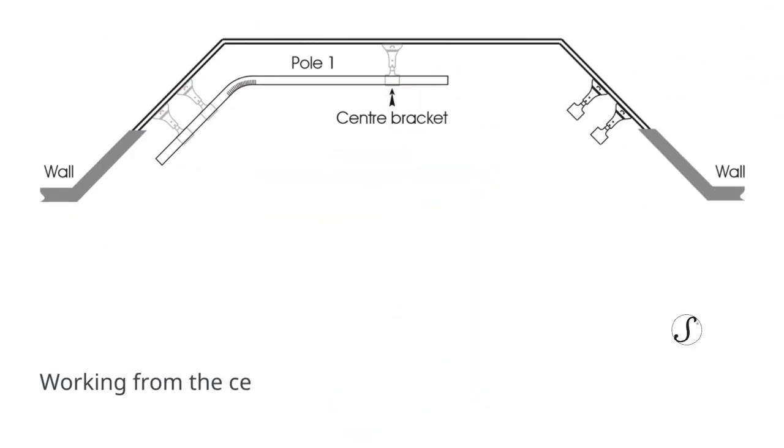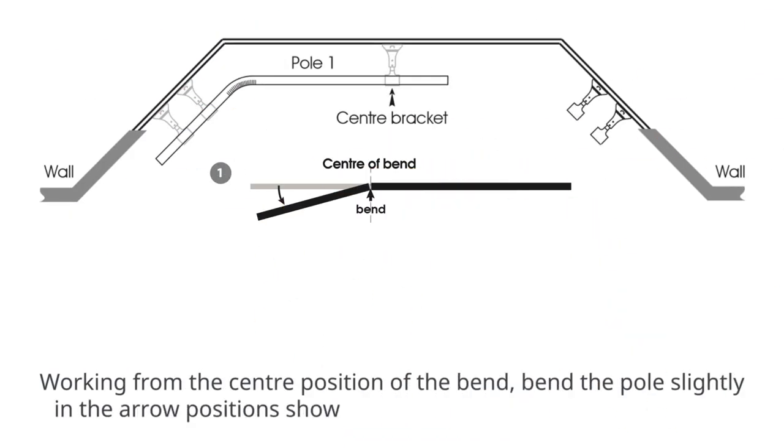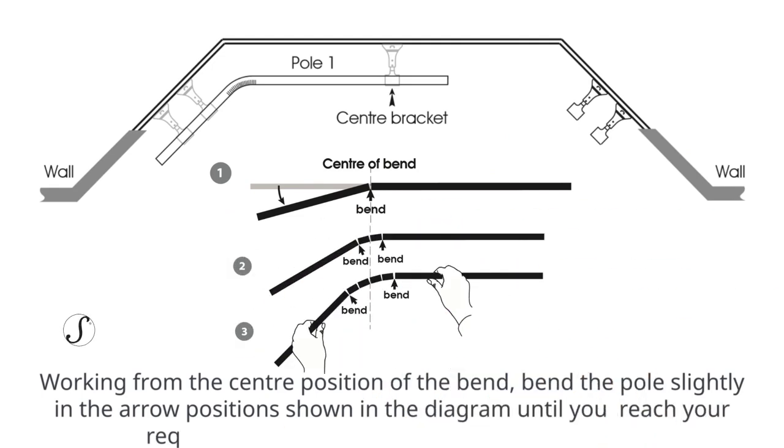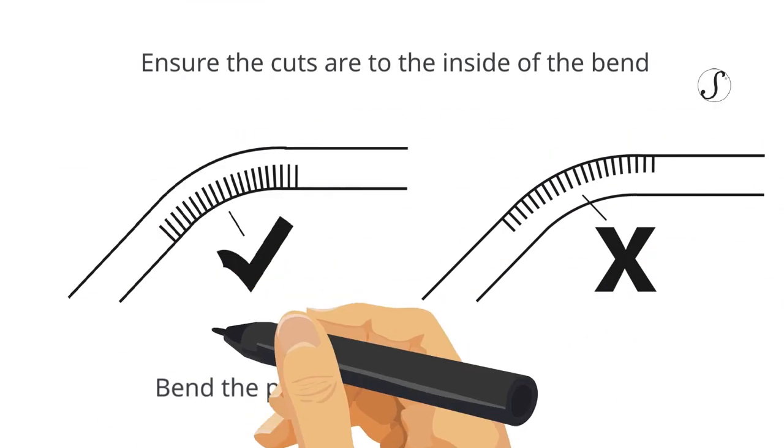Bending the bay pole. Working from the center position of the bend, bend the pole slightly in the arrow positions shown in the diagram until you reach your required angle checking the fit as you go along. Ensure the cuts are to the inside of the bend. Bend the pole in the direction of the slots.